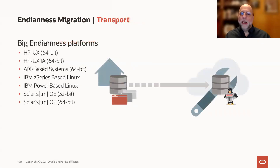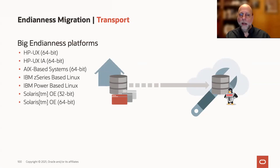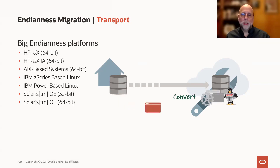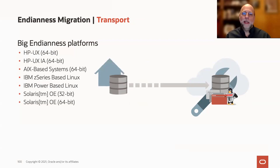When I say big Endian platforms, I mean things like the HP platforms — PA-RISC or Itanium — the IBM platforms: Z-Series, or Power-based AIX or Linux, or SPARC Solaris. Linux x86 Solaris is a little Endian platform. If you're going to migrate a database from one of these big Endian platforms to Oracle Cloud, you bring the data files over and then convert them once they're in the cloud to be little Endian.